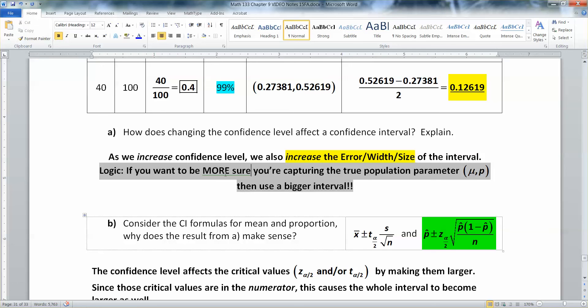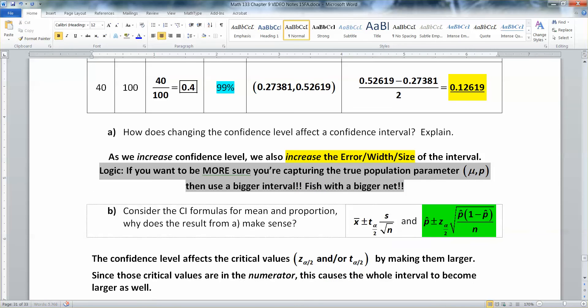So here's what we see happening. As we increase our confidence level, we are also increasing our error, our size of our interval. Now, this makes logical sense, right? If you want to be more sure that you're capturing what the true population parameter is, population parameter could either be mu or p, it doesn't matter, then use a bigger interval. Fish with a bigger net, right? You'll be more certain you caught it if you're out there with a bigger net, i.e. your interval. You're trying to capture what those values are with your interval.